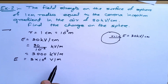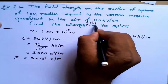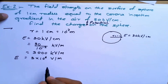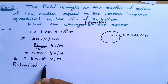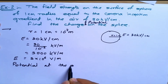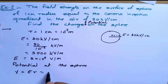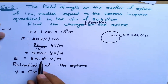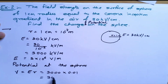To calculate potential: φ = E × R = 3000 kV/m × 0.01 m = 30 kV. So the potential at the surface of the sphere is 30 kV.